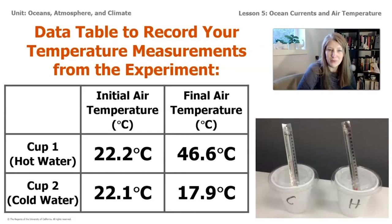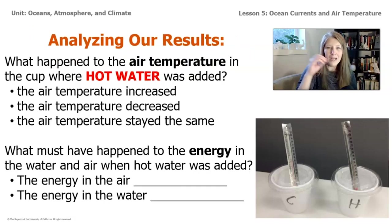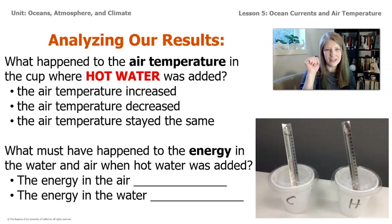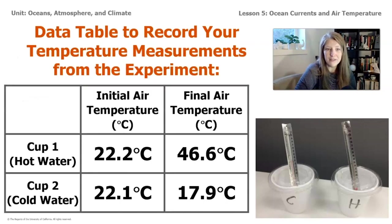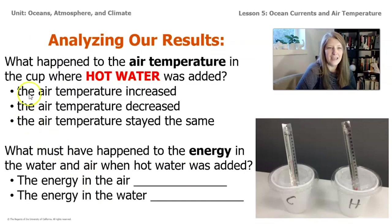As we can see from the data, the temperature in both cups changed. In the cup with hot water, the air temperature went up quite a few degrees Celsius, and in the cup with cold water the temperature went down quite a lot as well. The cup with hot water added started at 22.2 degrees and rose to 46.6 degrees — an increase of about 24 degrees Celsius. We can say with confidence that the air temperature increased when hot water was added.